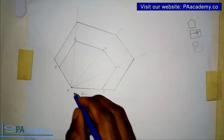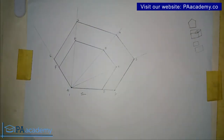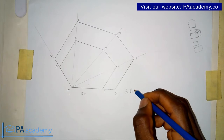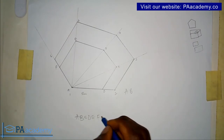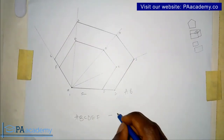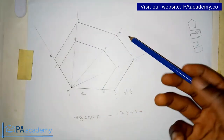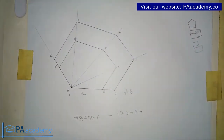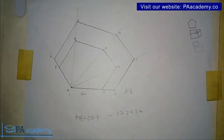Let's call the new vertices 1, 2, 3, 4, 5, and 6. So we now have polygon ABCDEF and its enlarged similar polygon 1-2-3-4-5-6. Polygon 1-2-3-4-5-6 is the enlarged form of polygon ABCDEF. That's how you enlarge any polygon — the same process applies irrespective of the number of sides.